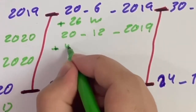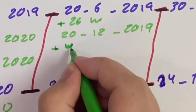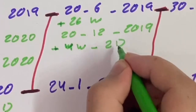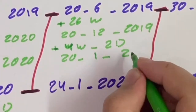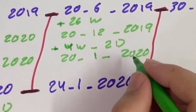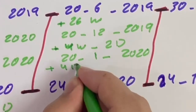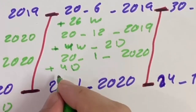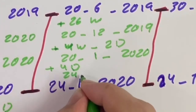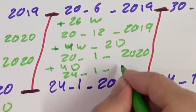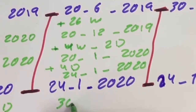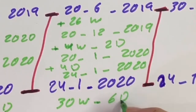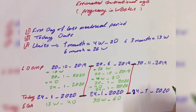We will add another month, which is 4 weeks and 2 days, so the date will be day 20, month 1, year 2020. We then add four more days, giving us the 24th of month 1, 2020 — today's date. So the estimated gestational age is 30 weeks and 6 days.